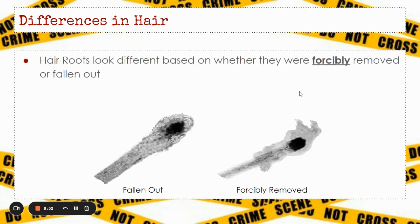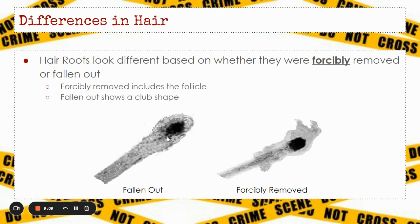Hair roots can look different based on whether they were forcibly removed or had naturally fallen out. If it is forcibly removed, there will be remnants of a follicle — you will see some skin cells attached to it, and it will have jagged edges. If it just naturally fell out, it's going to have a more rounded, club-shaped end.